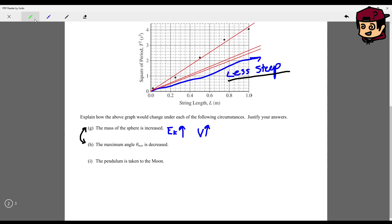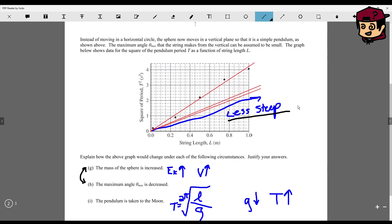And what if the pendulum is taken to the moon? We have an equation here, T equals, I forgot the 2 pi, 2 pi L over G. 2 pi is a constant. L is a constant. So as G decreases, T increases. So there, instead of having a less steep positive slope, we would have a more steep positive slope. Alright, that's how I took a look at this question.